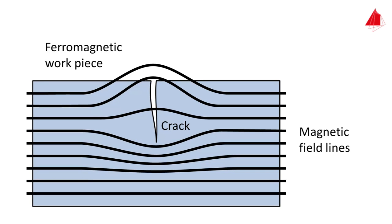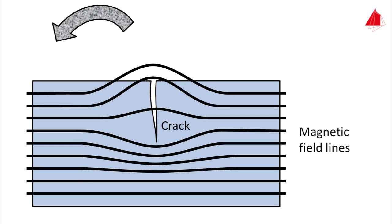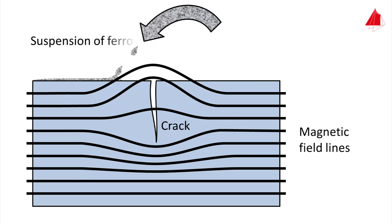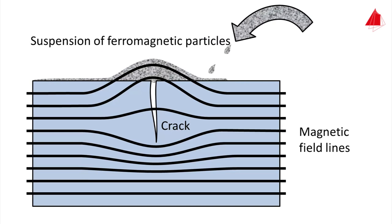Now if a suspension of ferromagnetic particles is applied onto the test piece surface, the magnetic particles will run off at defect-free areas. In places of leakage fields, the magnetic particles are attracted and clustered together.